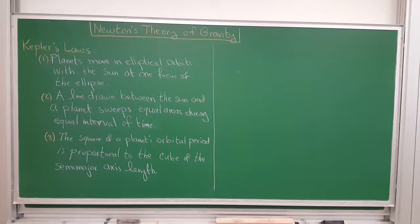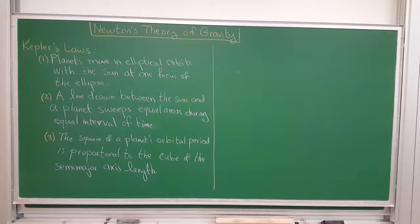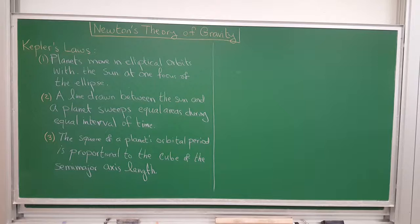The book goes into some historical aspects of the discovery of Newton's law of gravitation. I won't go through those — you can read about it in the book, it's about a page or two. So let's just read Kepler's laws. Kepler came before Newton and looked at many astronomical data and came up with three laws that summarized all the data he observed. He said: planets move in elliptical orbits with the Sun at one focus of the ellipse. A line drawn between the Sun and a planet sweeps equal areas during equal intervals of time. And the square of a planet's orbital period is proportional to the cube of the semi-major axis length.